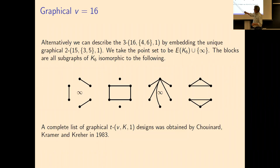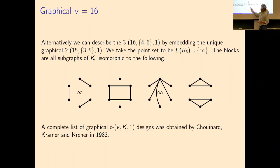So if you take on six points, you take all the matchings and you take all the stars, you get a two design, a 2-{15, 3, 5, 1}, and you can add a point at infinity to those, and then add all the four cycles and add all the disjoint triangles, then the edges as the points of your design, and these being the blocks, will make 3-{16, {4,6}, 1}, the same one, but a different way to look at it.